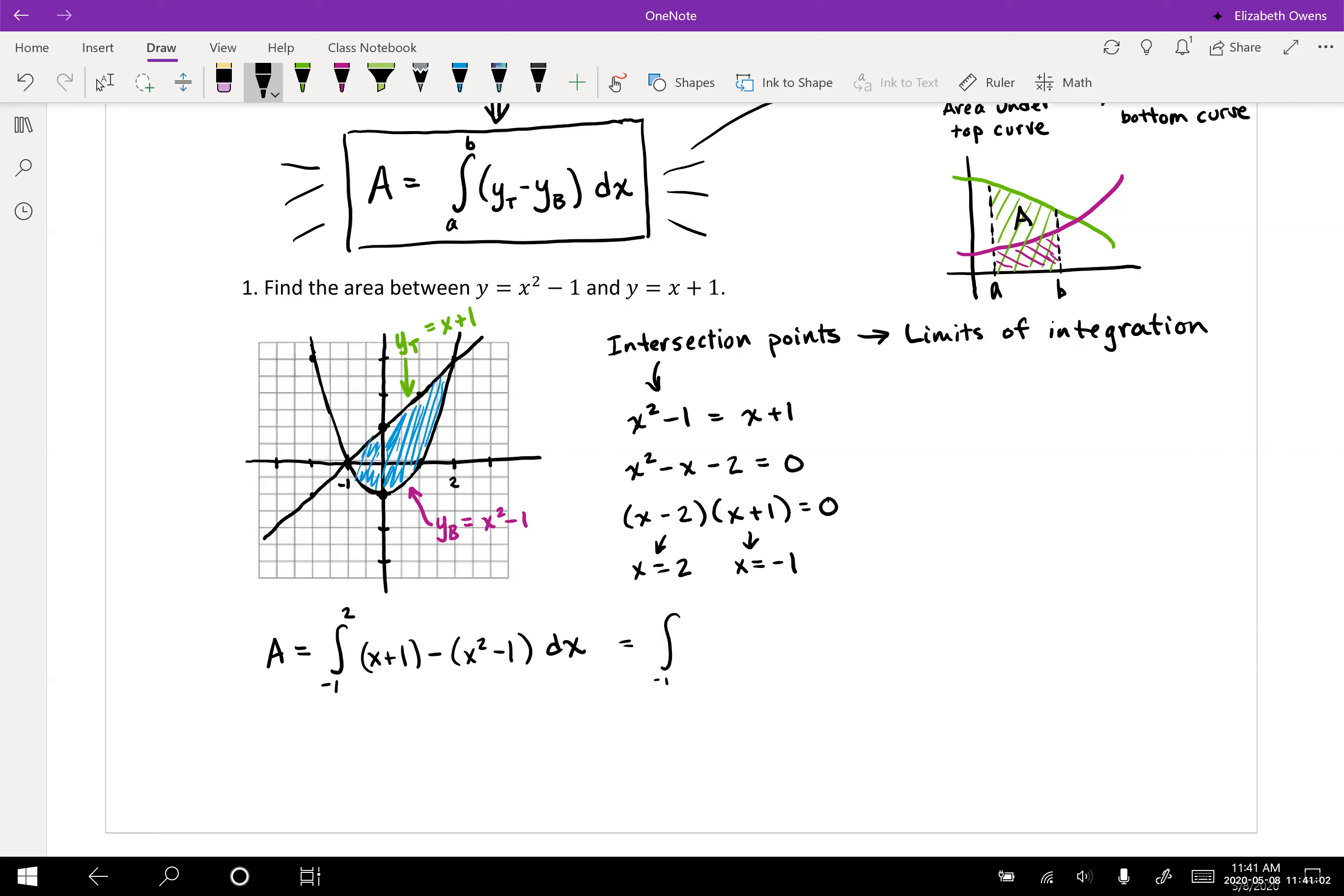Let's simplify that integrand. We're going to have negative x squared plus x and then we'll have a one and another plus one there, so plus two dx.